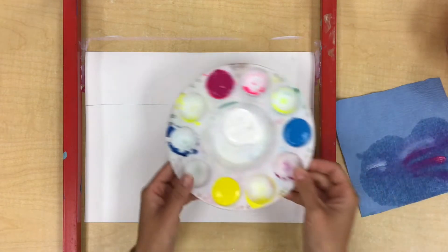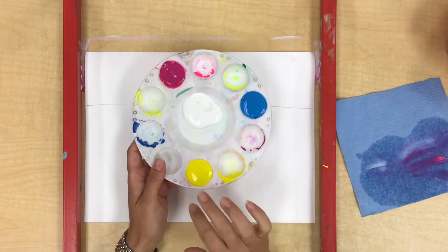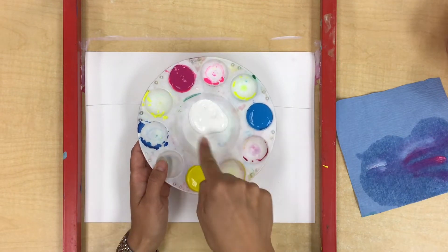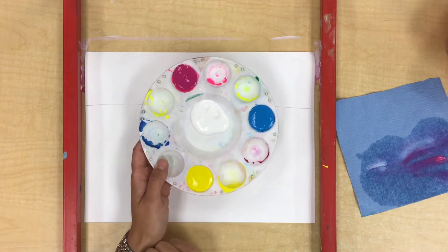So we're going to have three color choices of paint today: yellow, turquoise, and magenta, and there's going to be some white in the middle that we can add to make these colors lighter.